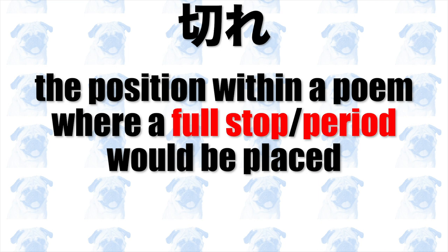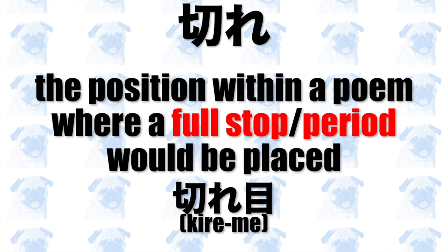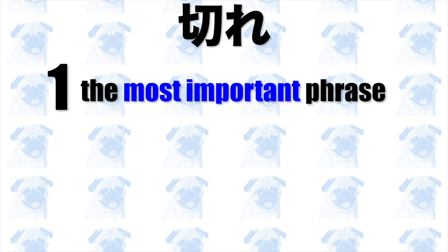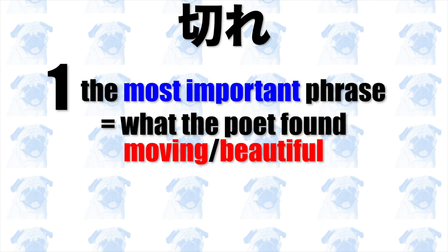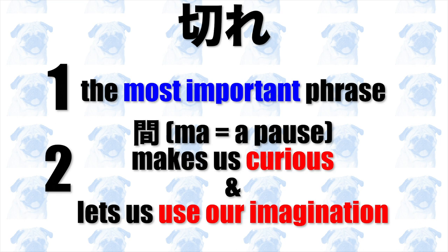The third and final characteristic of haiku is that every haiku must have a kire, or literally a cut. Kire basically refers to where you would put a full stop or period within the poem. The position where a full stop can be placed is called kideme. Kire has two main functions: first, kideme indicates the most important phrase of a haiku — it shows what the poet found emotionally moving or aesthetically pleasing and what the haiku is about. Second, by inserting a brief pause or ma, kire makes the reader curious about what comes next and allows them to let their imagination run free, making the haiku feel more captivating and impactful.